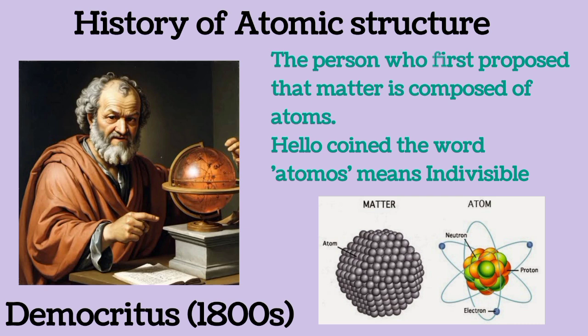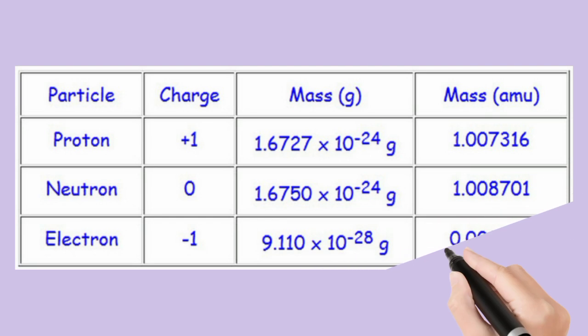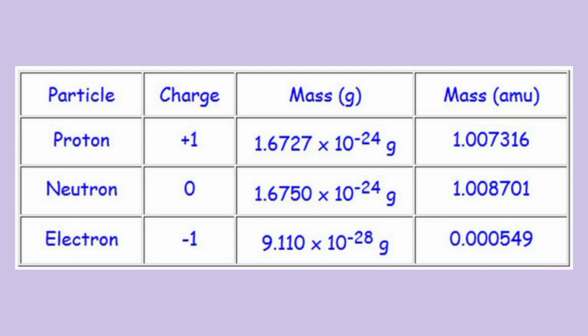The three fundamental particles of the atom have their charges and masses in grams and atomic mass units. The charge of a proton is +1, the neutron is zero meaning it has no charge, while the electron has a negative charge. The mass of proton and neutron are the same.